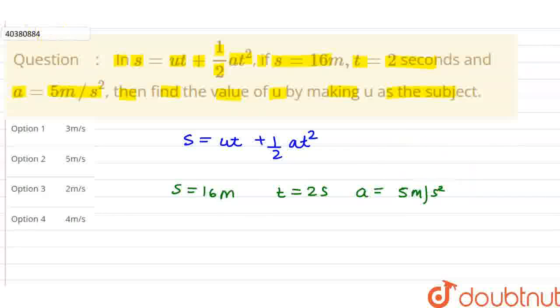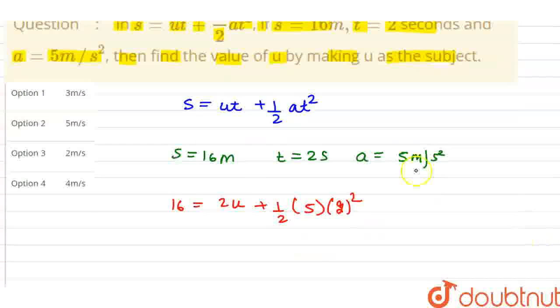We need to find out u, so we apply these 3 values. s is 16. Time is 2, so it is 2u. Plus half into a value of 5. Time is 2, so we will take out 2 squared.